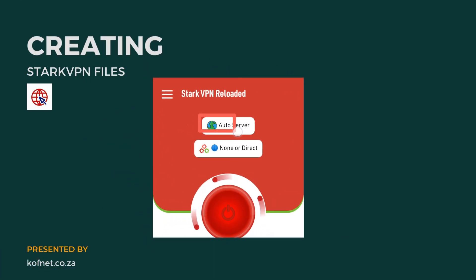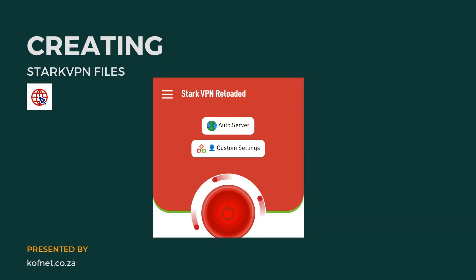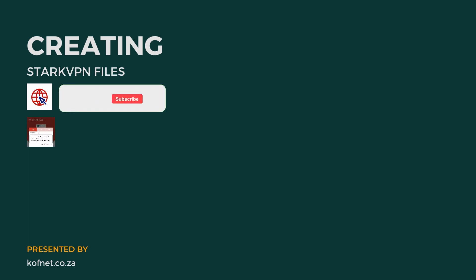When you open the app, you'll notice that Stack VPN doesn't allow you to change their server — they provide you with a random server. In the tweaks field, you can select their custom tweaks or create your own. Since this video is all about creating custom files, let's select custom settings. In the navigation bar, you also need to select custom settings there as well.